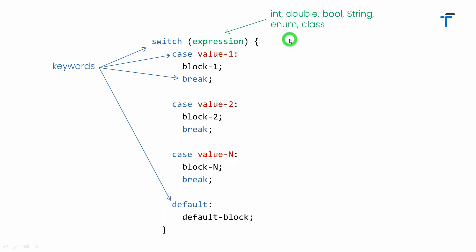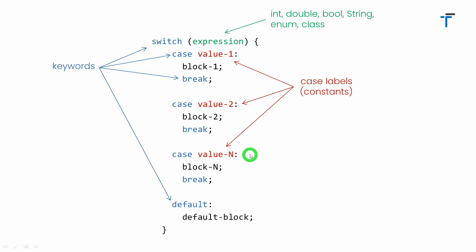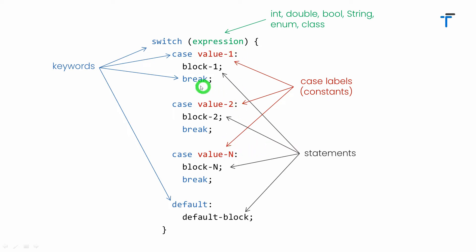The expression in switch can be of type integer, double, boolean, string, enum, and it can also be of type class. Normally, we use expression as the variable against which the comparison has to be done. Value 1, value 2, value n are known as the case label and these are constants — make sure that the case label must have a colon written here. Block 1, block 2, block n, and even the default block are the statements or a block of statements that you want to execute as part of switch case.